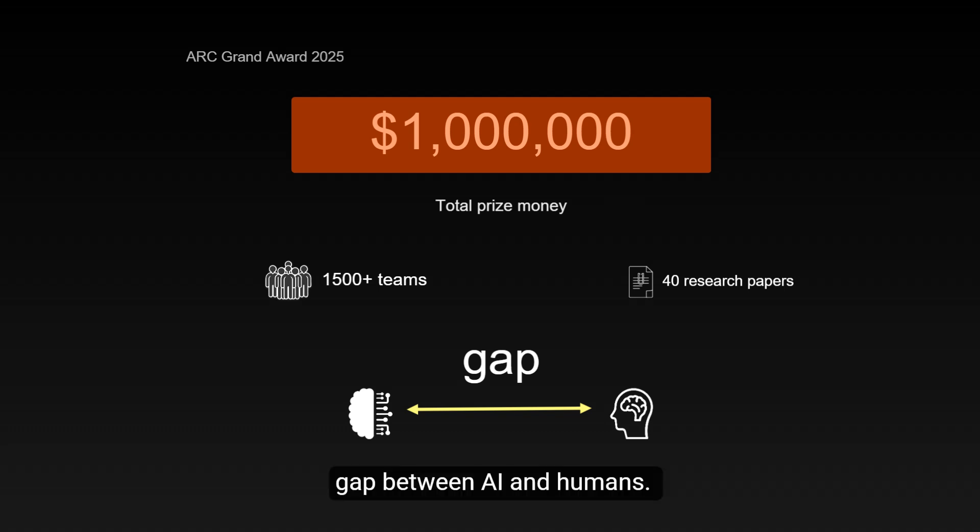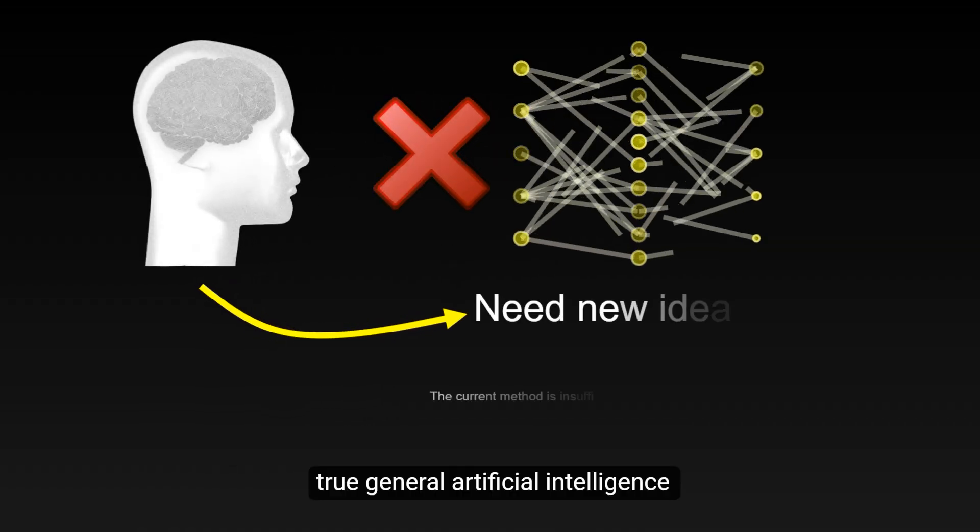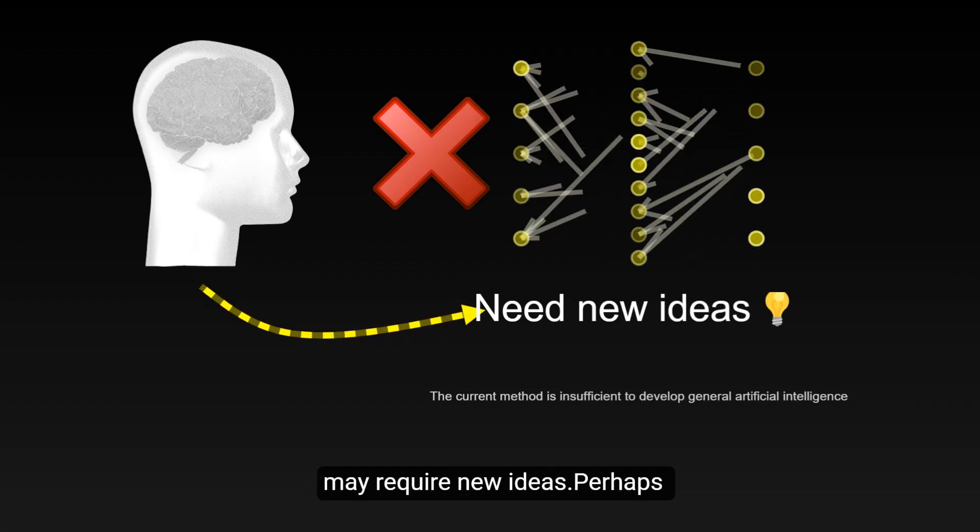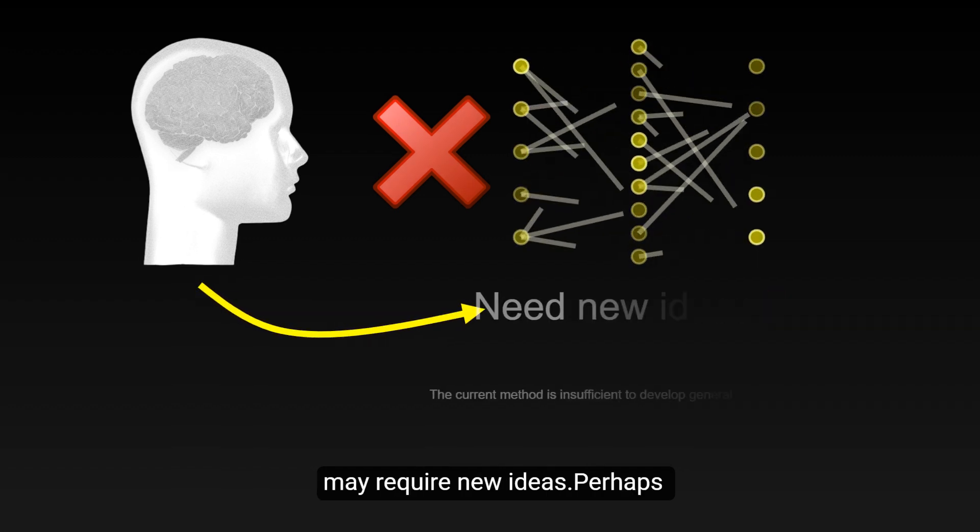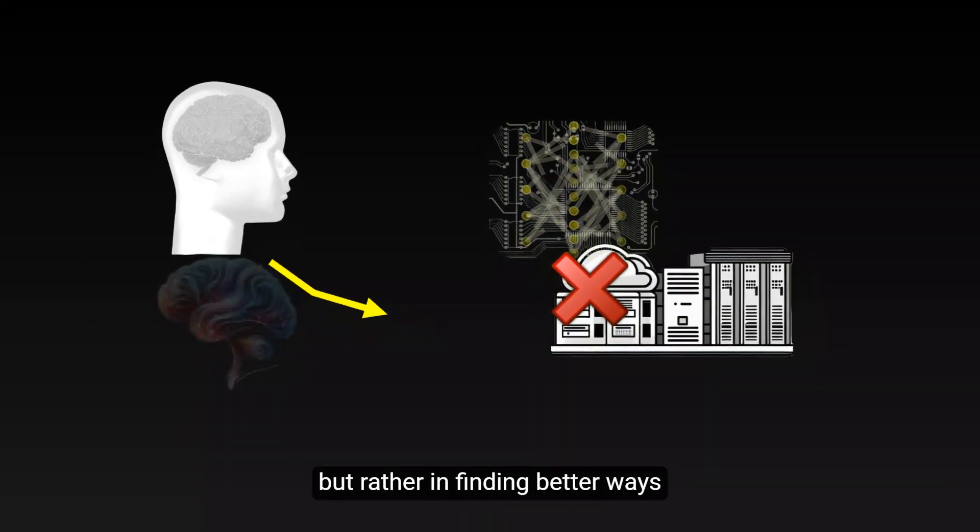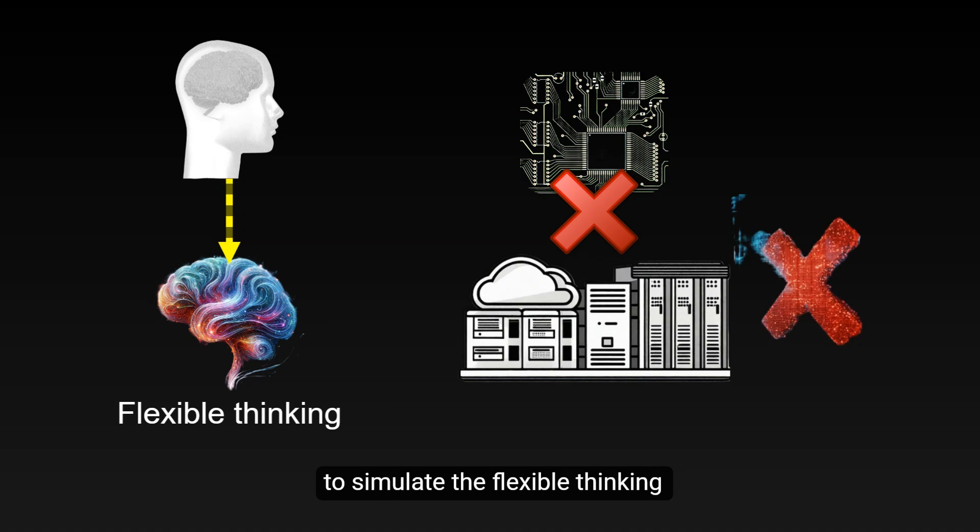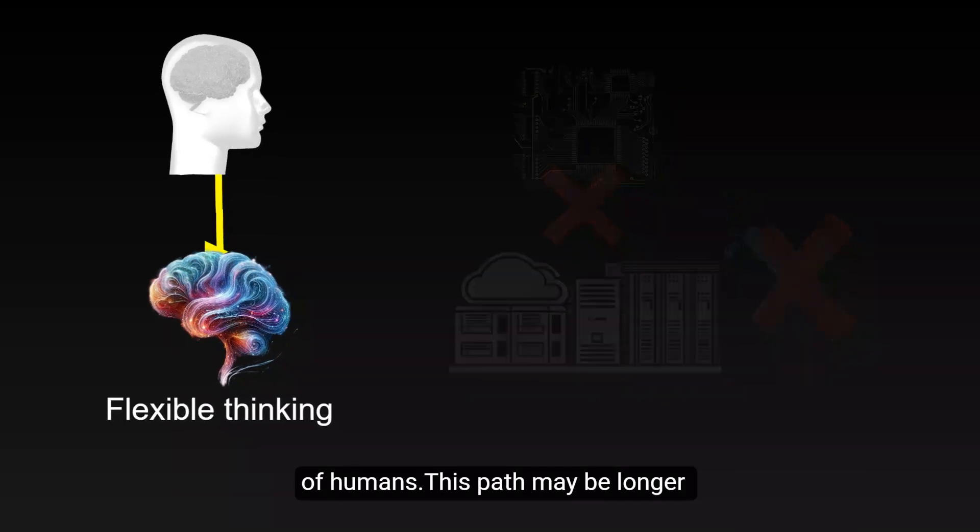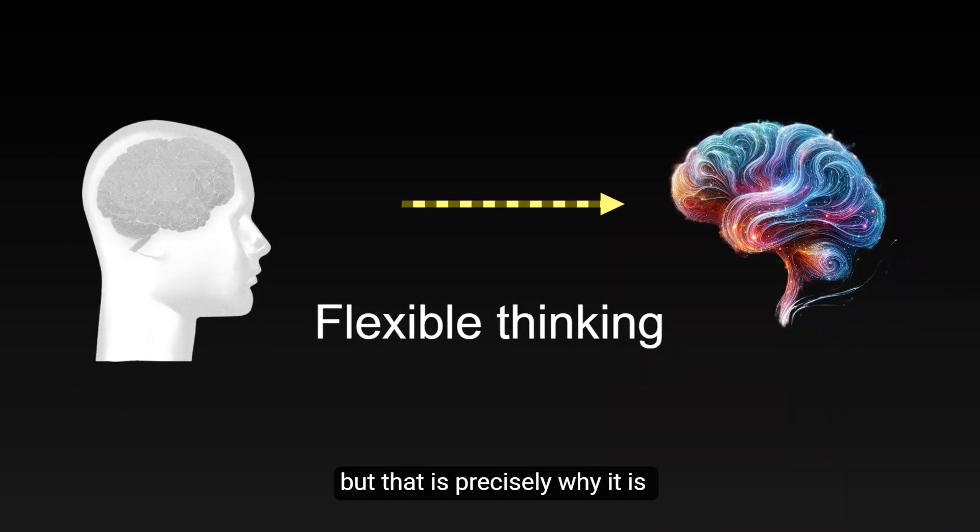This test tells us that developing true general artificial intelligence may require new ideas. Perhaps the answer does not lie in simply increasing computational resources, but rather in finding better ways to simulate the flexible thinking of humans. This path may be longer than we imagined, but that is precisely why it is more worth exploring.